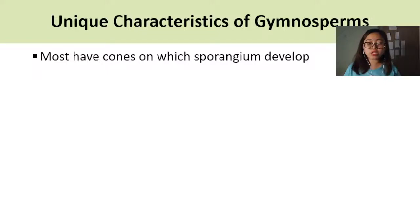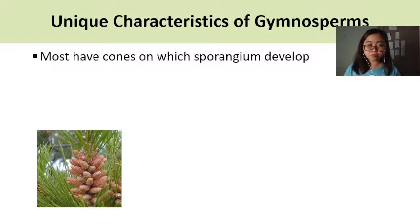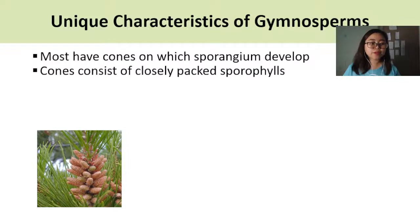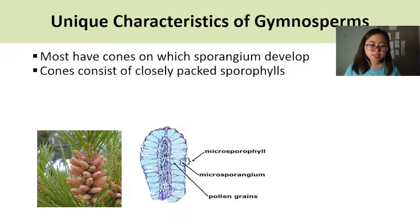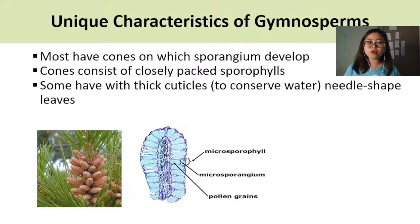Another unique characteristic of gymnosperms is that most of them have cones on which the sporangium will develop. In pine trees, they have male and female cones. The male cones consist of closely packed sporophylls, similar to the pteridophytes or lycophyta discussed in a previous subtopic. If we zoom in to one cone, we see that each cone comes from a microsporophyll, and within the microsporophyll there is a microsporangium, and within the microsporangium there is a pollen grain.